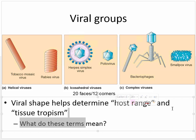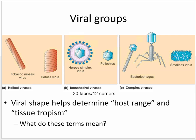Host range means the type of host or hosts that a virus can infect. Some viruses, like rabies, can infect just about any mammal. Some viruses like certain types of hepatitis can only infect humans — that's a very narrow host range. In bacteriophages, which are viruses that only infect bacteria, their host range is limited to certain bacteria. Tissue tropism refers not to the type of animal but to the tissue they're capable of infecting. A hepatitis virus, for example, can only infect liver cells.